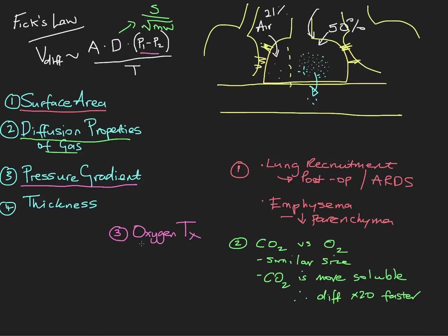So giving people oxygen works via this pressure gradient by increasing what we call delta P — the difference between P1 and P2. By doing that, we create a much steeper gradient for the oxygen to travel down. That's how this pressure gradient influences our diffusion, and this is really the basis of why we give people supplemental oxygen.